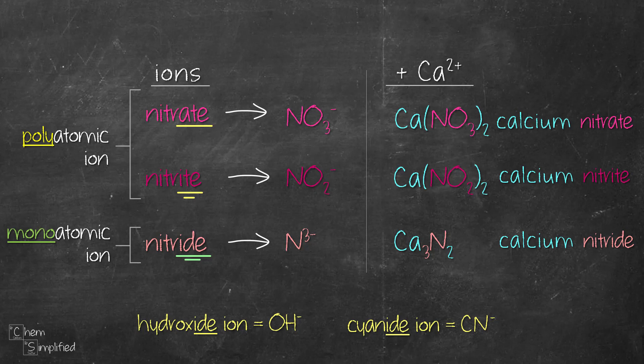Also take note on the subscript of calcium, the number to the bottom right of calcium. Because the charges on polyatomic ion is negative 1, therefore when you do the cross over charge, we only need 1 Ca for the ionic formula. Whereas when we cross over the 3 from nitride 3 minus, that 3 will cross over and we will need 3 Ca. So that's another difference here.